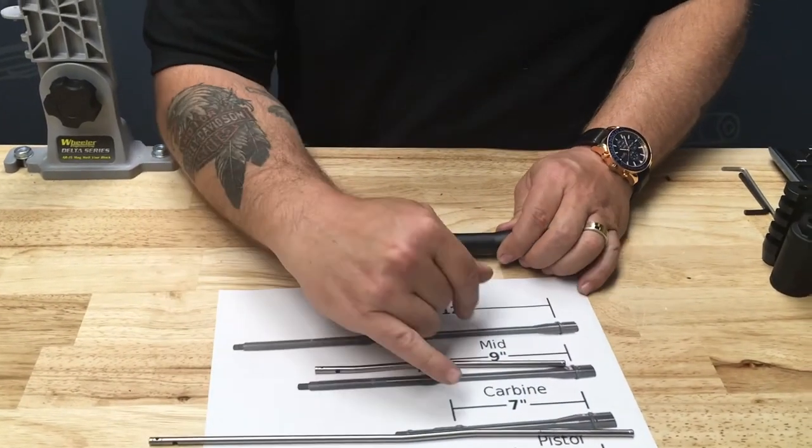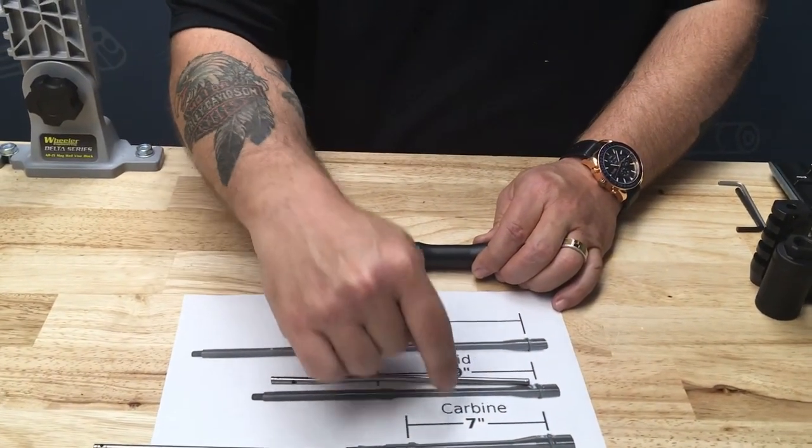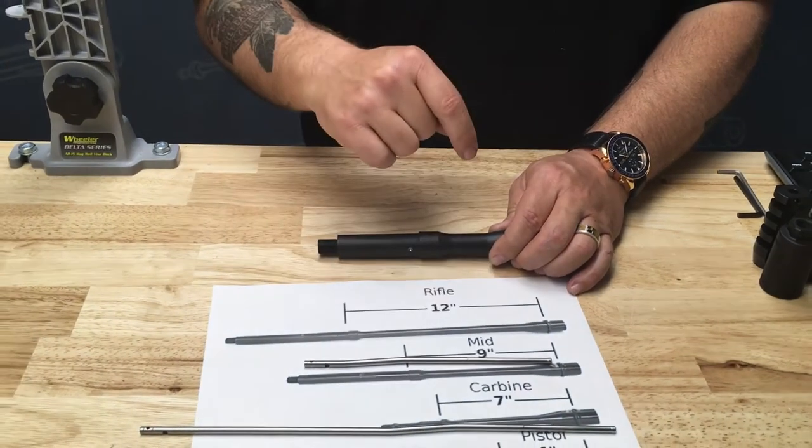Another quick and easy way to remember at least these two: seven inch carbine has seven letters, and mid-length has nine letters. So that helps you distinguish the two that are closest in size, the other two being pistol and rifle.